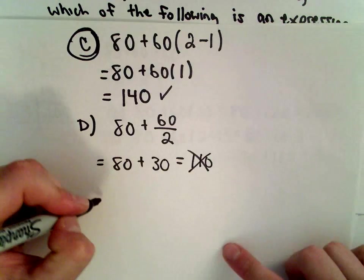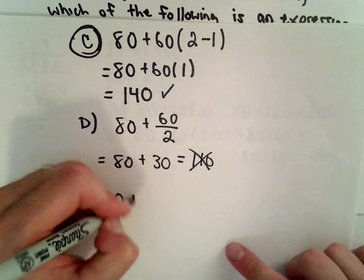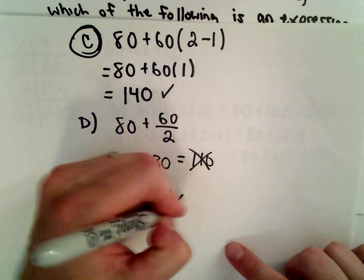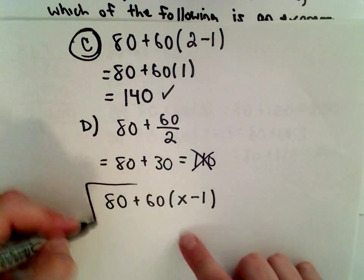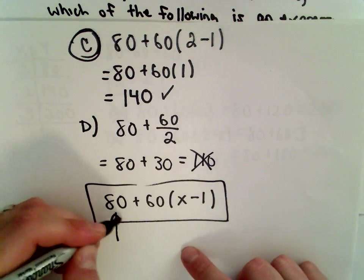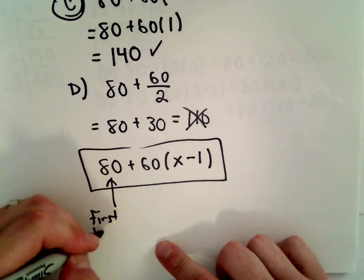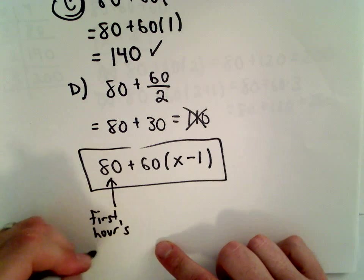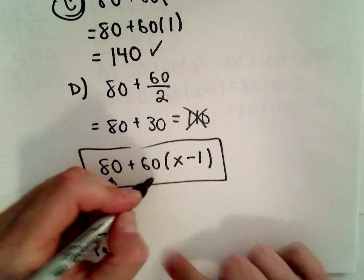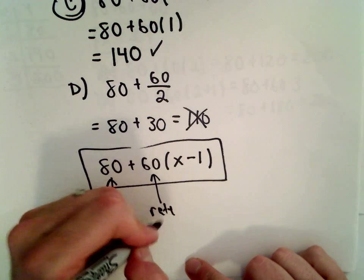And again, this formula makes sense. And the reason why this formula makes sense, the 80 dollars represents the first hour, the first hour's rate. Now, 60 is going to be the rate for additional hours.